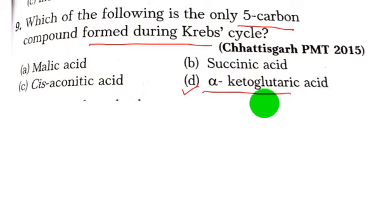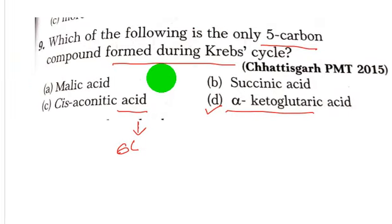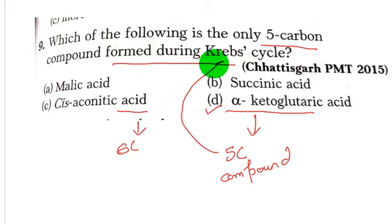It was discovered by Hans Krebs in 1938. Cis-Aconitic acid is a 6 carbon compound, whereas Malic and Succinic acid are 4 carbon compounds. So alpha-ketoglutaric acid is the 5 carbon compound formed in this Krebs cycle.